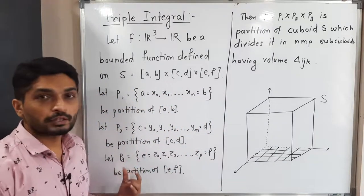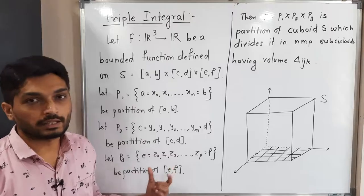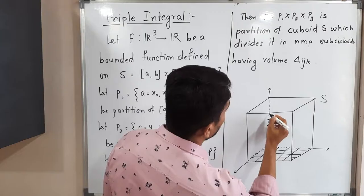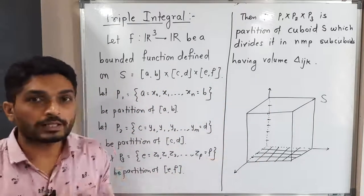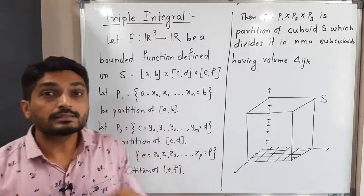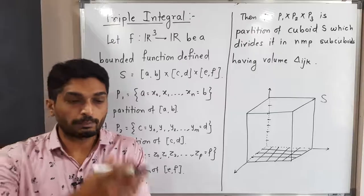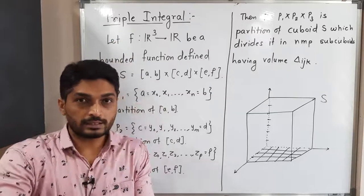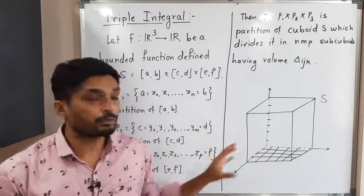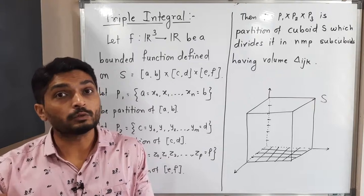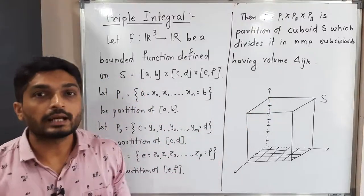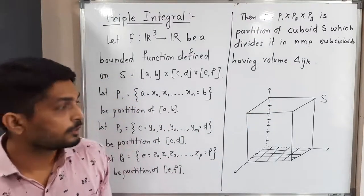We take partition P3 of the closed interval [e,f], giving us a partition along the z-axis. Because of these three partitions, the cuboid S is divided into m × n × p sub-cuboids. The volume of each sub-cuboid is denoted delta_ijk.